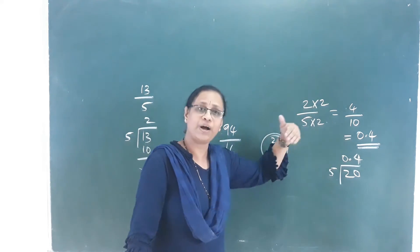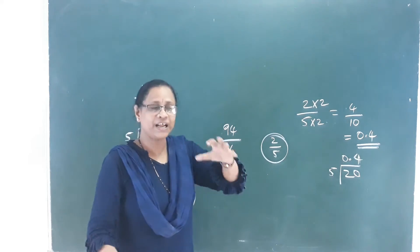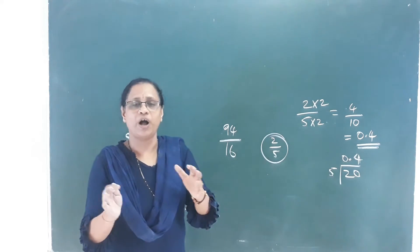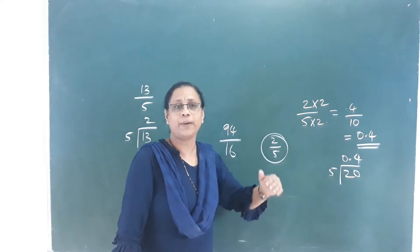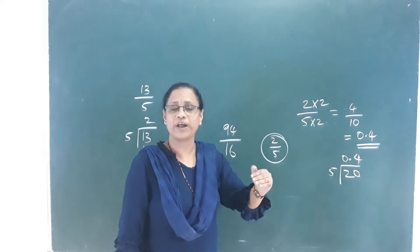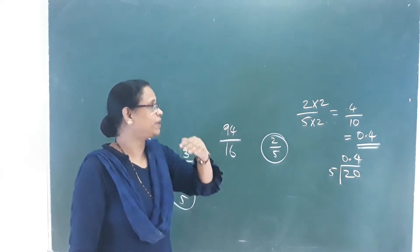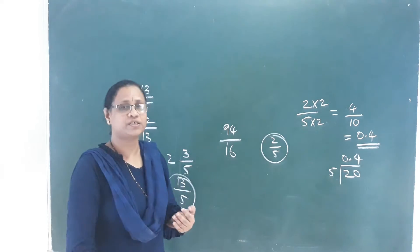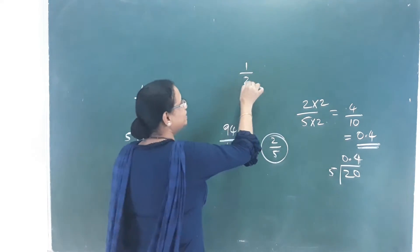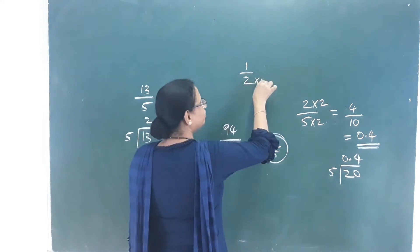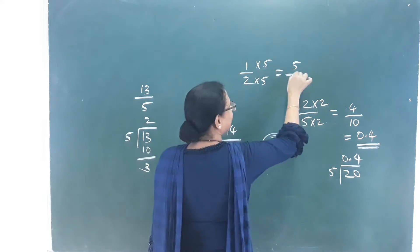That is, what is the denominator made into 10? We need to terminate the fractions — meaning we stop the answer. For example, 1 by 2: multiply by 5 over 5, giving 5 by 10.